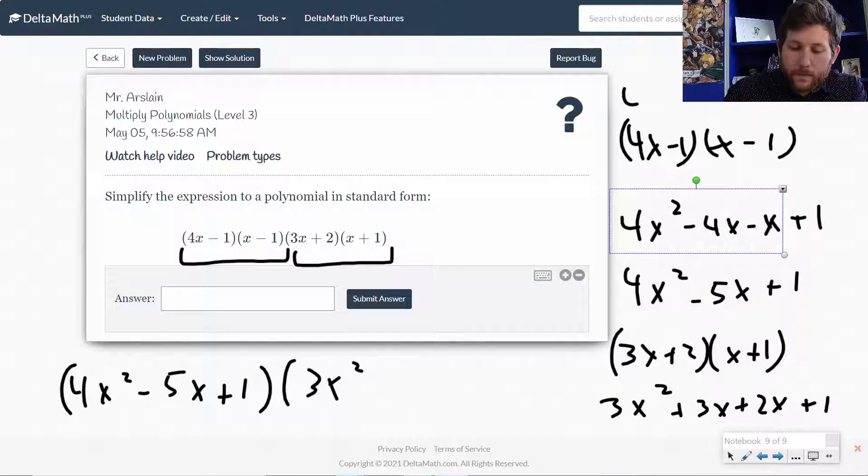And I get 3x squared plus 3x plus 2x plus 1. Or if we simplify that over here, 3x squared plus 5x plus 1.